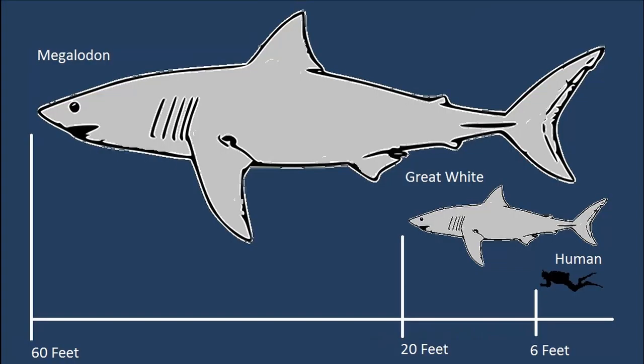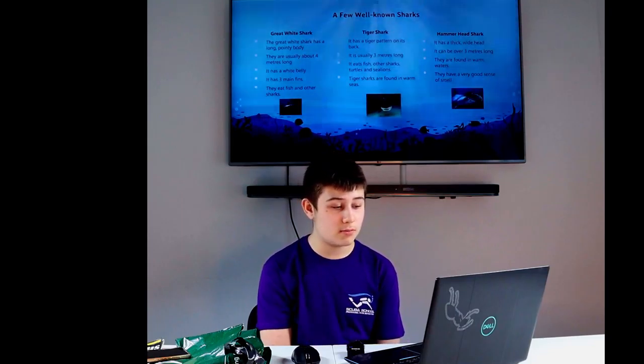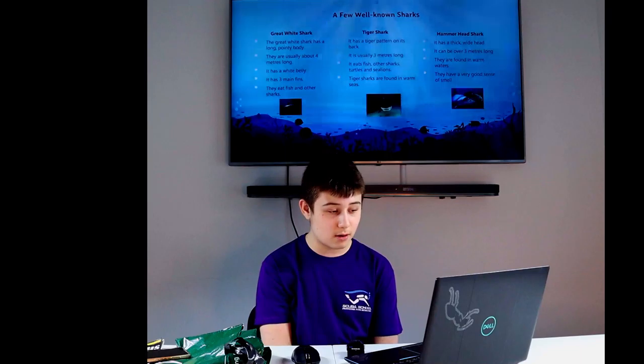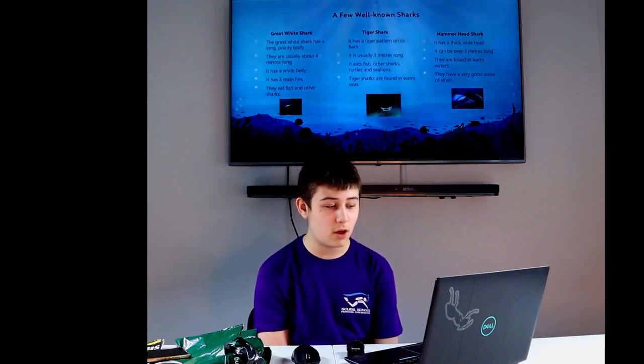Great white shark: The great white shark's body has a long and pointed shape. They are usually about four meters long. It has a white belly. It has three main fins. They eat fish and other sharks, turtles and sea lions.